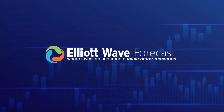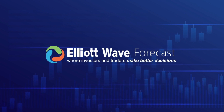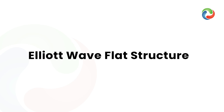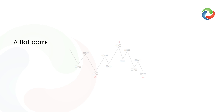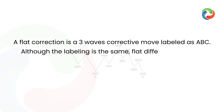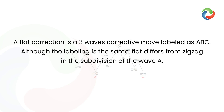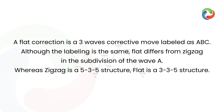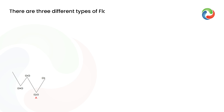Hello and welcome to Elliott Wave Forecast Learning. Today we're going to learn about Elliott Wave flat structures. A flat correction is a three-wave corrective move labeled as ABC. Although the labeling is the same, flat differs from zigzag in the subdivision of wave A. Whereas zigzag is a 5-3-5 structure, flat is a 3-3-5 structure. There are three different types of flats.